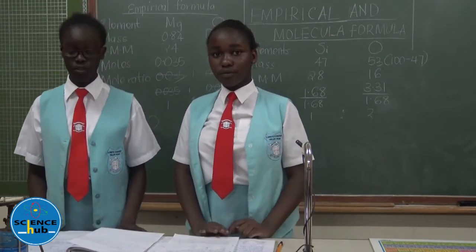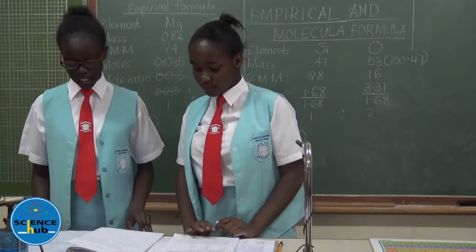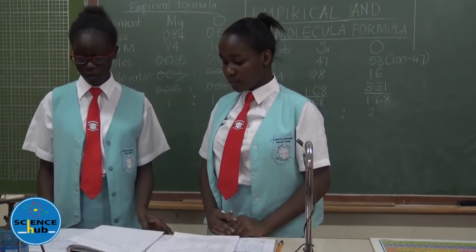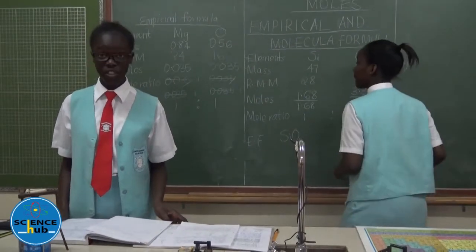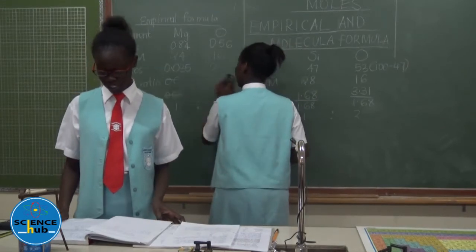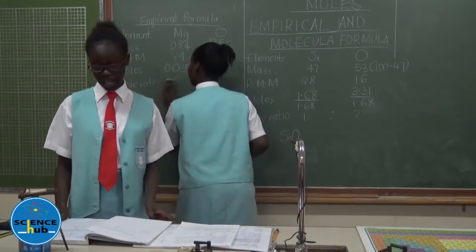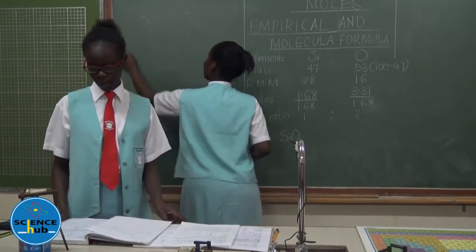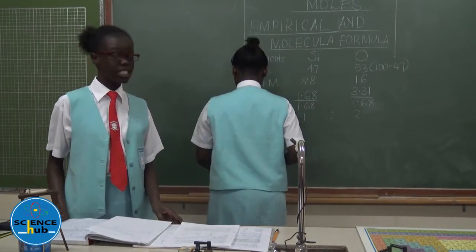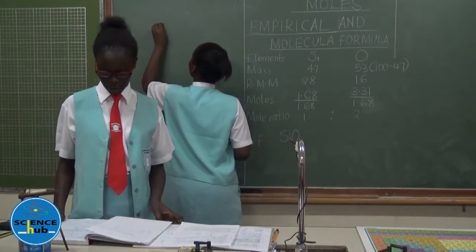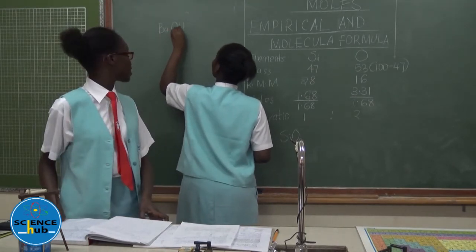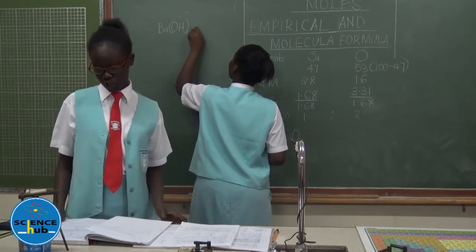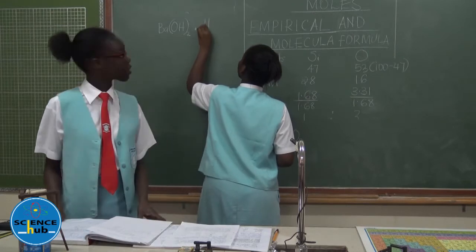We will now move to our second question. When 94.5 grams of hydrated barium hydroxide was heated to constant mass, 51.3 grams of anhydrous barium hydroxide was obtained. Determine the empirical formula of the hydrated barium hydroxide. The formula is Ba(OH)2·nH2O, where we do not know the value of n, the number of water molecules.